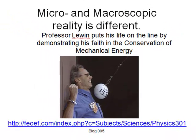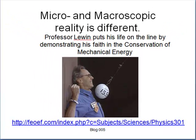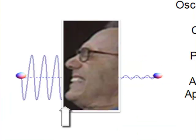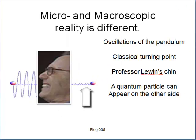But he knew that he was safe because he knows that the pendulum cannot exceed its classical amplitude. Let's illustrate the oscillations of our quantum pendulum. Here is a classical turning point right on Professor Lewin's chin, which is a physical barrier, like a wall.